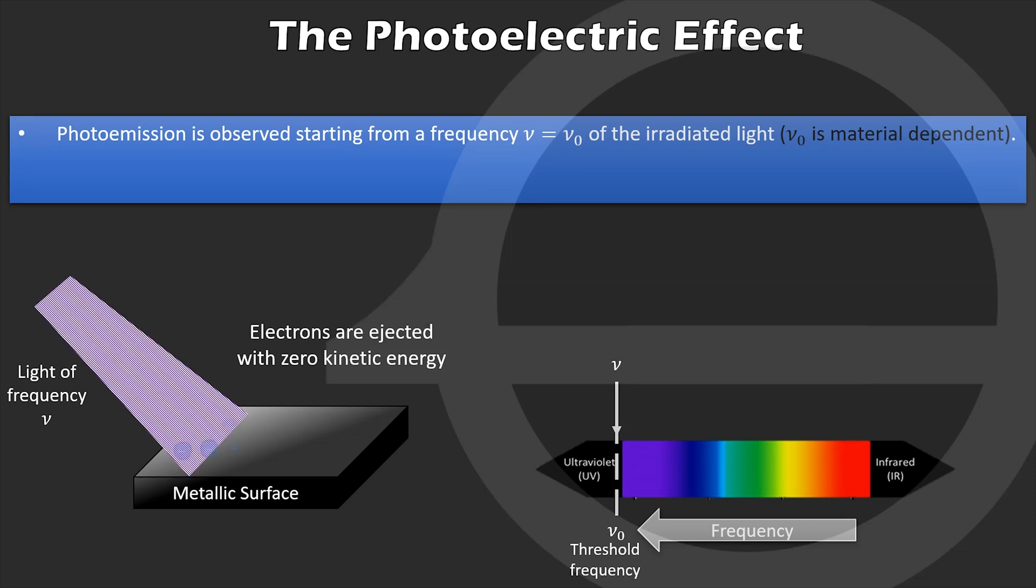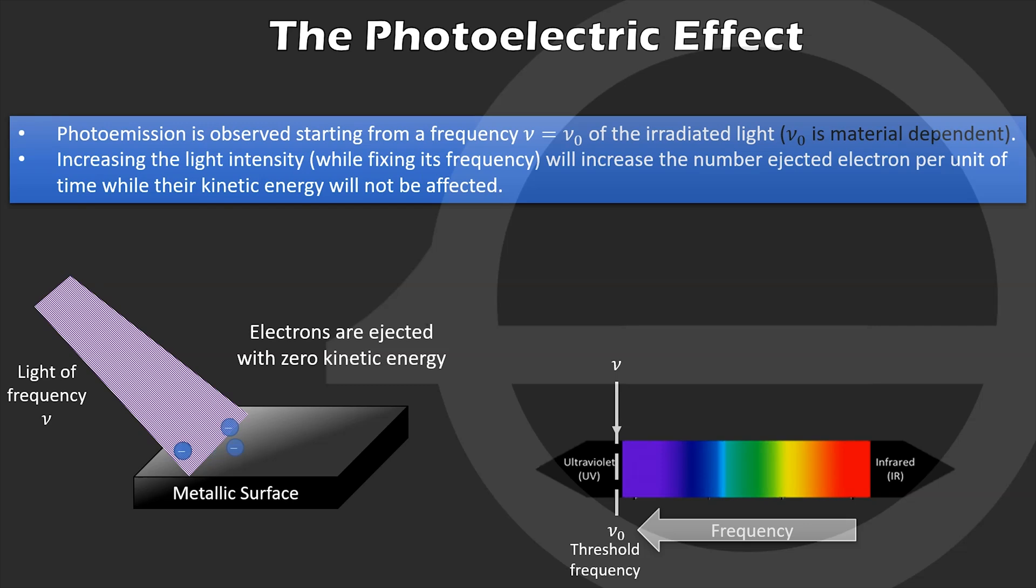We now start increasing the light intensity while keeping its frequency at nu-naught. We note that as the intensity increases, the number of emitted electrons per unit of time, known as electrons emission rate, increases, but electrons are still emitted with zero kinetic energy. As a result, light intensity has no effect on electrons energy, it only affects their emission rate.